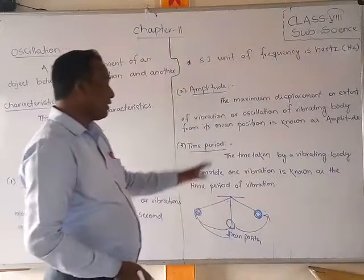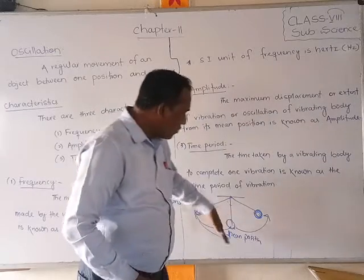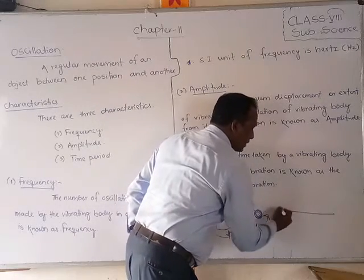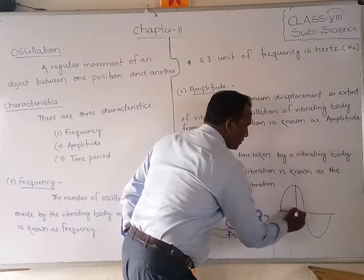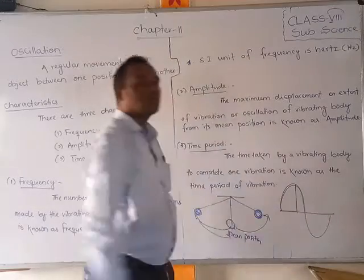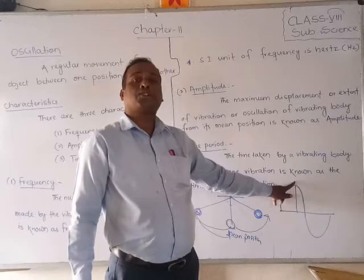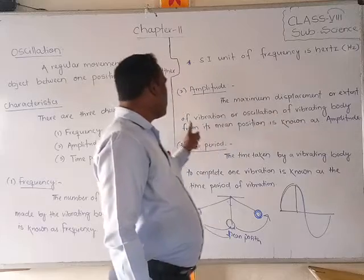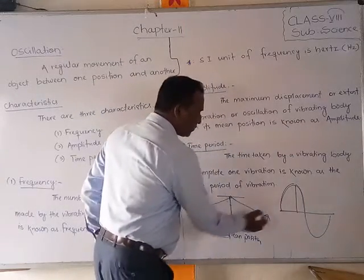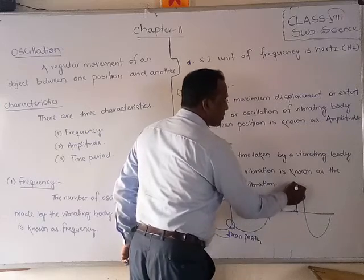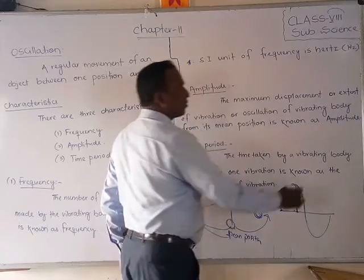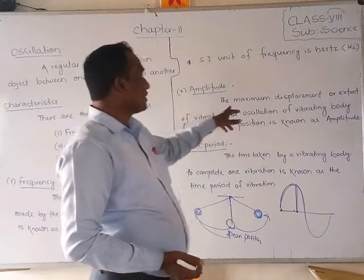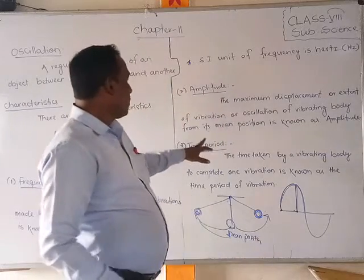So the maximum displacement means how far the object can go from the mean position during vibration — that maximum distance is called amplitude. The maximum displacement of the vibrating body from its mean position, how much height or how much extent it is going — that is called amplitude.